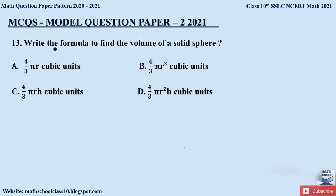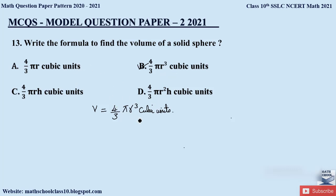Question 13: Write the formula to find the volume of a solid sphere. The volume of a solid sphere is (4/3)πr³ cubic units. Option B is the correct option. Again, look at the options carefully as all answers are very similar.